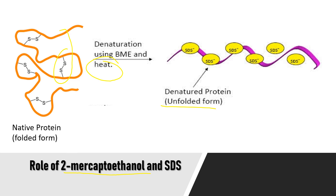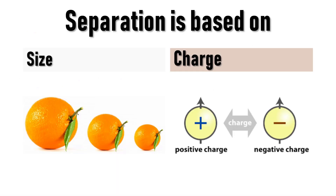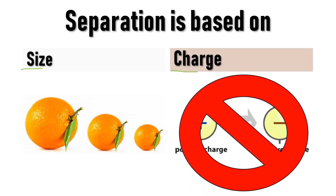SDS binds to the unfolded protein and solubilizes it. SDS also provides an overall negative charge to the entire protein — approximately one SDS molecule binds to every two amino acids. Proteins differ from each other on the basis of size as well as charge, but since the proteins are denatured with an overall negative charge due to SDS, the movement on the gel will not be based upon the charge of the protein.